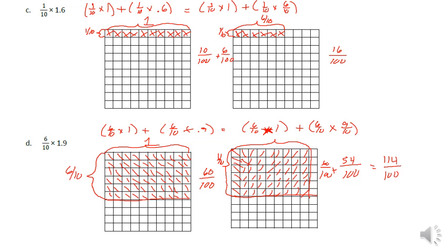If we want to convert this back to a decimal, the 4 would go in the hundredths place, so we'd end up with 1.14. For the first model result, the 6 is in the hundredths place, so we have 0.16.